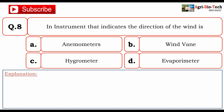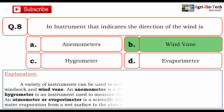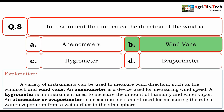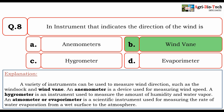The correct option is B. Wind vane. A wind vane is an instrument used for measuring wind direction. A hygrometer is an instrument used to measure the amount of humidity and water vapor. An atomometer or evaporimeter is used for measuring the rate of water evaporation from a wet surface to the atmosphere. So the correct answer is B. Wind vane.